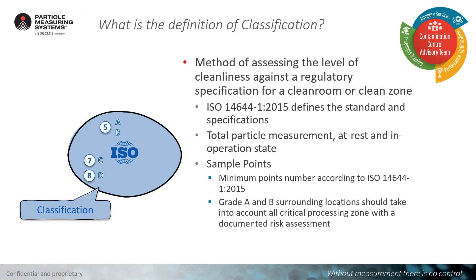Regarding the association between the pharmaceutical grades and the ISO classes: grades A and B must comply with the ISO 5 requirement in an at-rest occupancy state, grade C the ISO 7, and grade D the ISO 8. To declare that a clean room or a clean zone created by equipment is classified, we must measure the total particle count in two different occupancy states: at rest and in operation.